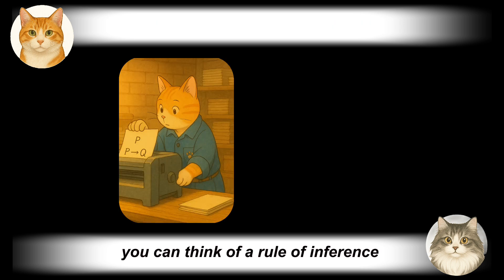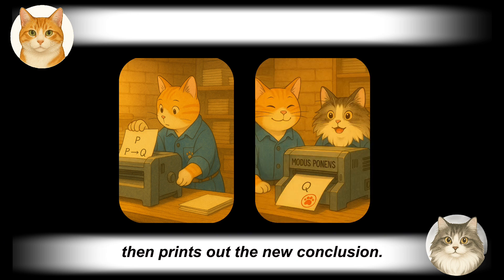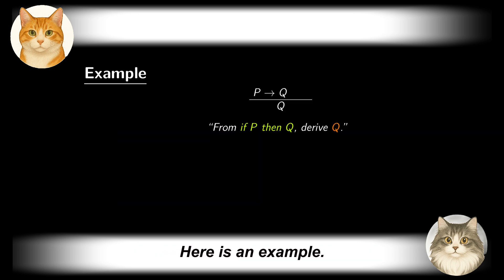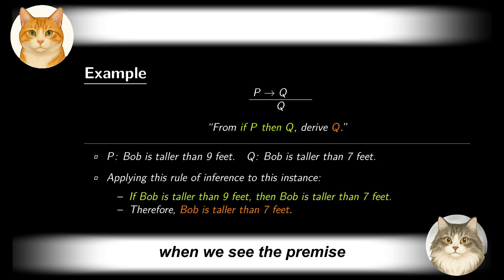If you like, you can think of a rule of inference as a magic printer. It scans an input consisting of premises, then prints out the new conclusion. Here is an example: Suppose a rule of inference states from the premise 'if P then Q' derive the conclusion Q. Let us consider an instance. Let P be 'Bob is taller than 9 feet' and Q be 'Bob is taller than 7 feet.' By applying the rule, when we see the premise...